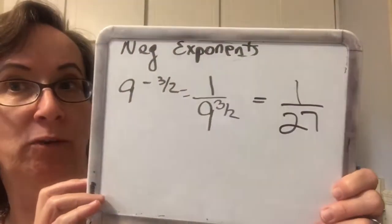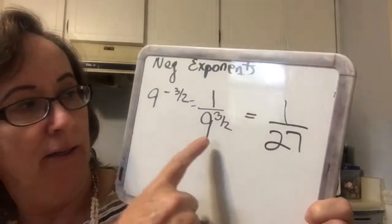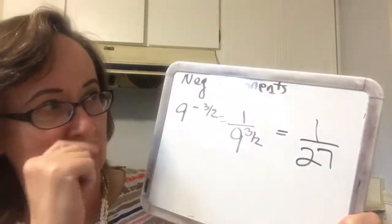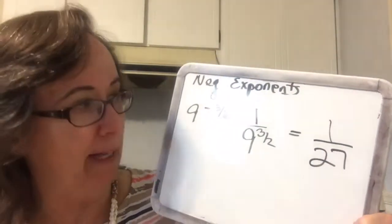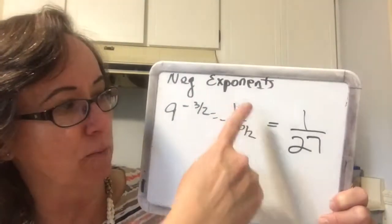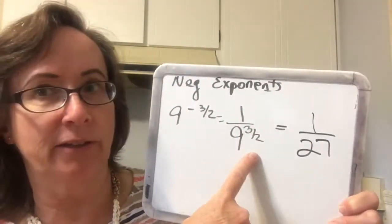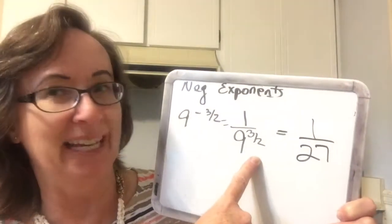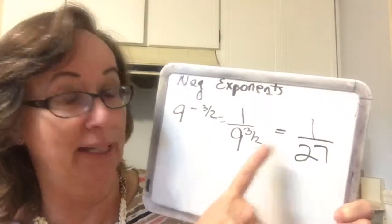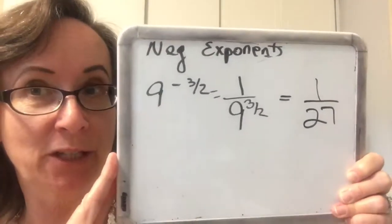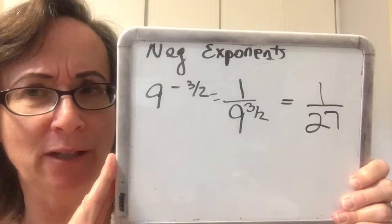Before I go on, I found one error. 9 to the negative 3/2 is 1 over 9 to the 3/2 — I had that right. But when I simplified it, I put the answer as 27. It's really 1 over 27. So please correct that in your notes. I'm sorry.